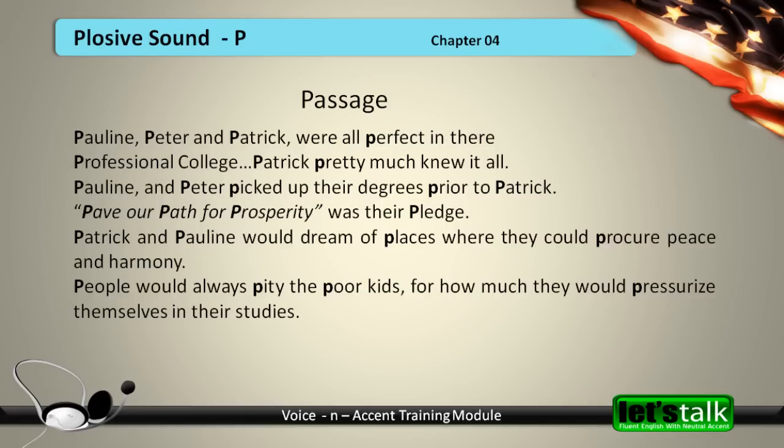Now let's practice further the plosive P sound with a passage. Pauline, Peter, and Patrick were all perfect in the professional college. Patrick pretty much knew it all. Pauline and Peter picked up their degrees prior to Patrick. 'Pave our path for prosperity' was their pledge. Patrick and Pauline would dream of places where they could procure peace and harmony. People would always pity the poor kids for how much they would pressurize themselves in their studies.